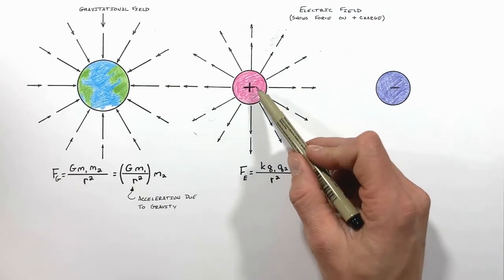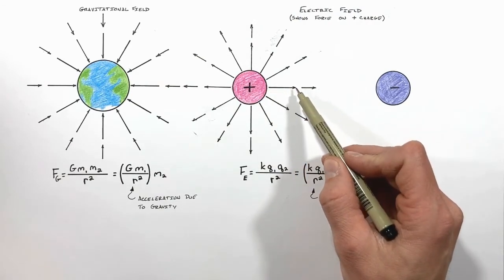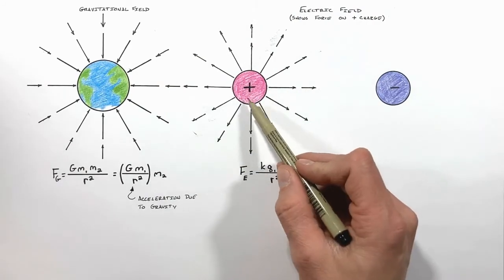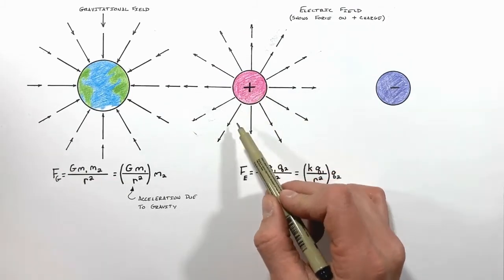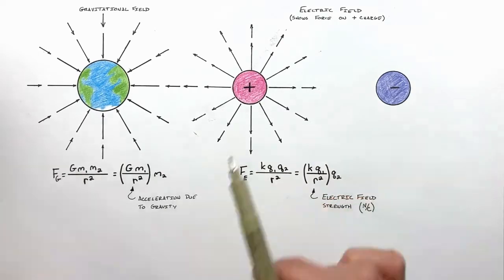So we show the electric field as acting away from this positive charge, and we're also able to show that as a test charge is placed farther and farther away from the central charge, the electric field is going to be weaker and weaker.